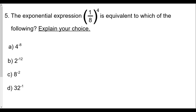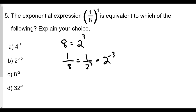I recommend changing eight itself into a smaller base. Eight equals two to the third power because eight is two times two times two. So one over eight is one over two to the third, which is the same as two to the negative three. That means our expression one over eight to the fourth is the same as two to the negative three, raised to the fourth power.